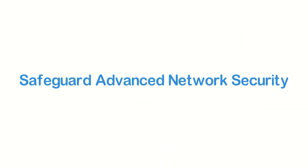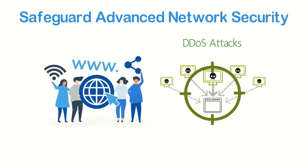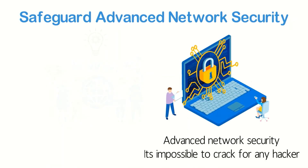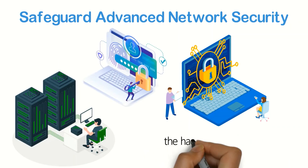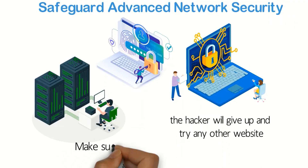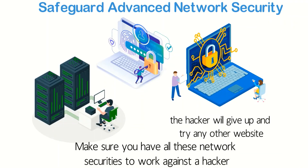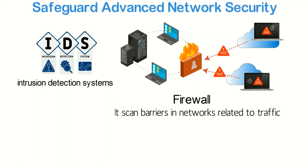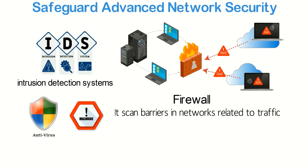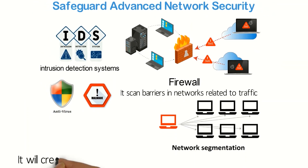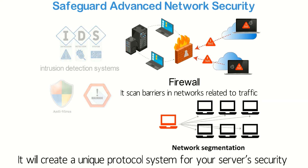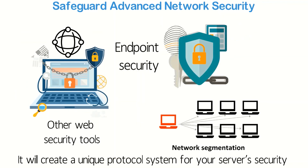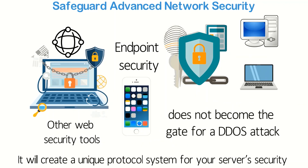Safeguard with advanced network security: With the increase in DDoS attacks, web owners are also getting more intelligent and creating advanced network security that is almost impossible to crack. If you use high-level security networks, in most cases, the hacker will give up and try another website. Make sure you have: IDS (Intrusion Detection Systems) and Firewall to scan traffic barriers, antivirus and anti-malware to decrease risk, network segmentation to create a unique protocol system, other web security tools, and endpoint security to ensure your devices — PC, laptop, or mobile — do not become the entry point for a DDoS attack.